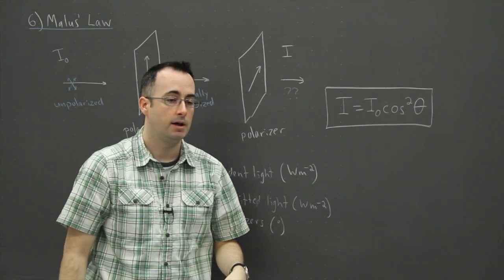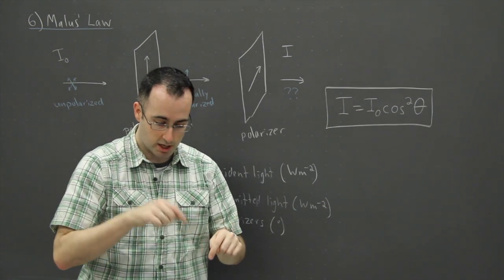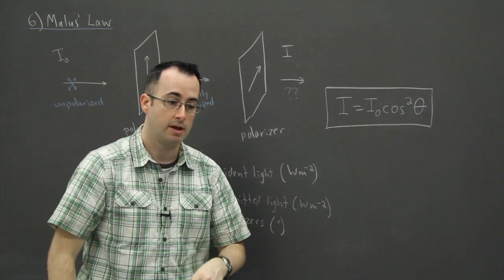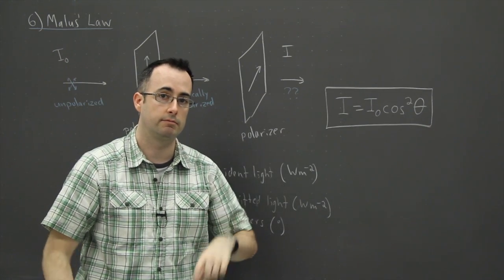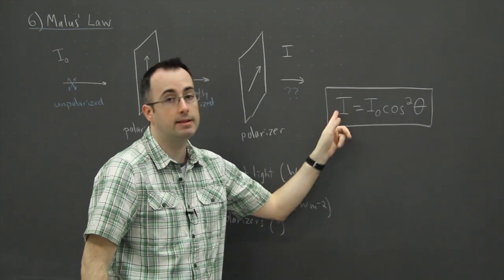So on your calculator, let's say the angle was 15 degrees, you'd say cosine of 15 degrees, press enter, answer squared, enter. And then you'd multiply that by this and you'd get that.